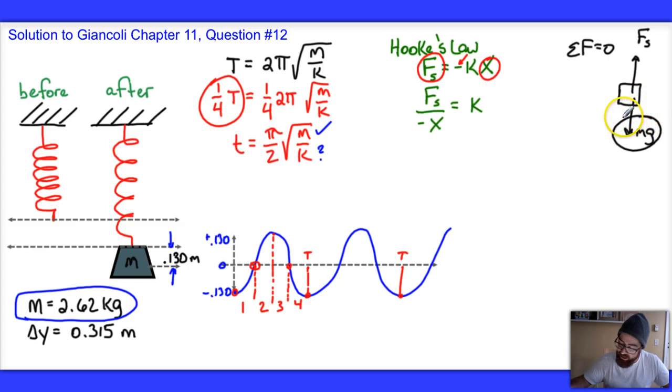And so, therefore, Mg is equal to the restoring force, the force of the spring, and can be substituted there. So, I get Mg over negative X is equal to K.